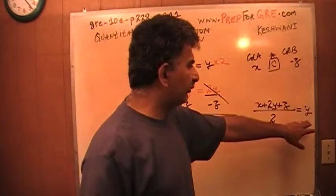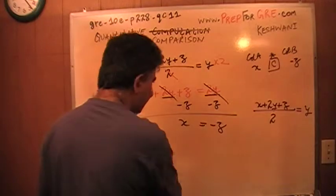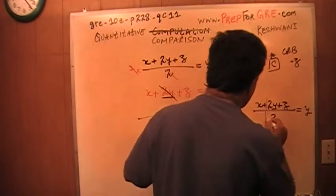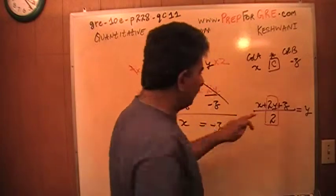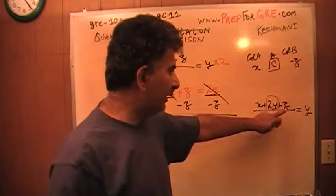We are told that all of this equals y. Now, we know that 2y over 2 would reduce to y. This is y and this is y.